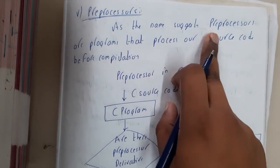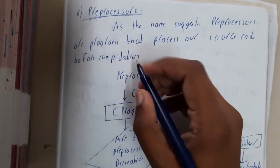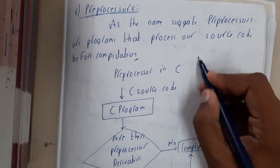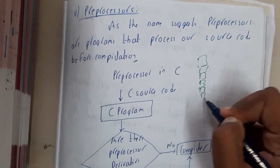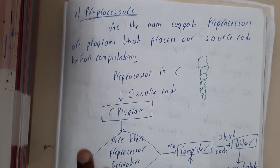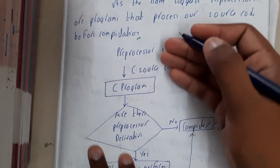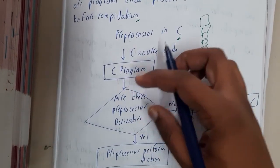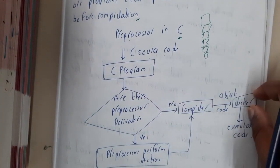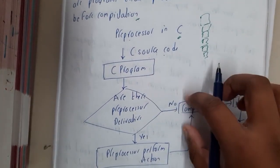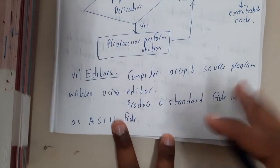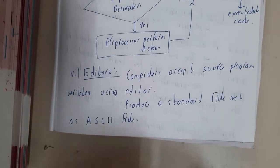As the name suggests, pre-processors are programs that process our source code before compilation. Before compilation, all header files are added — first header file, second, third, fourth, and so on. A simple flow in C: the program is processed, and if there are any pre-processors they are added; if not, it moves directly to compilation. After that, linking and loading of all jobs is done.